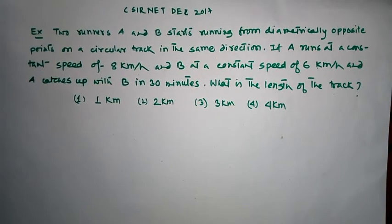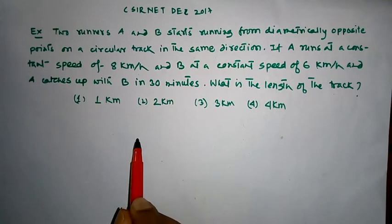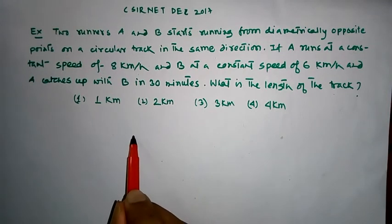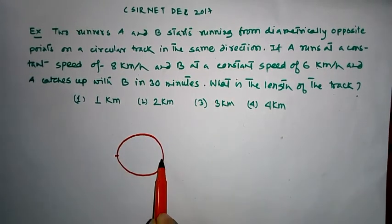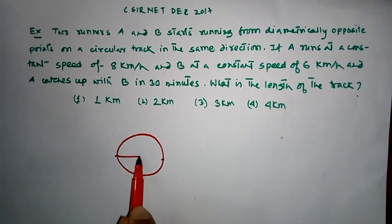This question was shared in December 2017. In the question, there are two runners A and B who are diametrically opposite on a circular track.